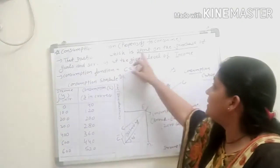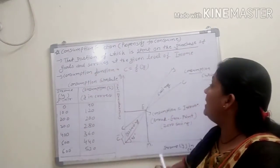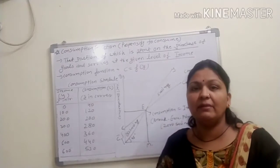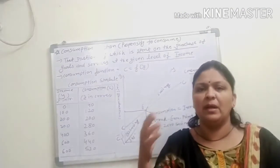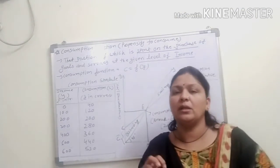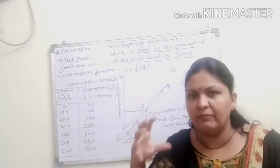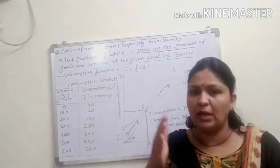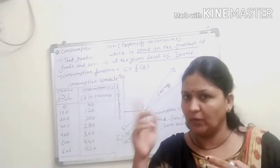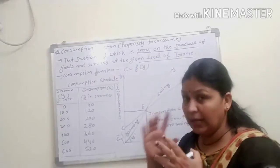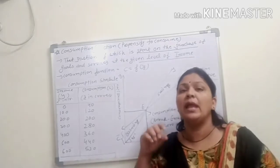Consumption function refers to that proportion which is spent on the purchase of goods and services at the given level of income. Given level of income means your income is fixed — maybe 0, maybe 100, 200. According to your income, you just plan out your consumption. Keep in mind aggregate demand: when we talk about consumption, we talk about the consumer, which is the concept of demand.